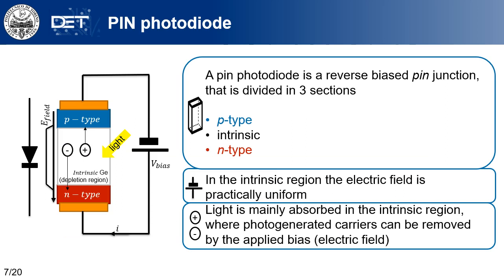Before introducing the reference structure, let us introduce a simplified device. A PIN photodetector is a device made up of three regions doped in different ways: a P-type doped region, an intrinsic region where most of the light is absorbed, and an N-type doped region. The N and P regions provide the desired electric field inside the device, which is practically constant over the intrinsic region and is used to remove the photogenerated carriers so they can contribute to the overall current.